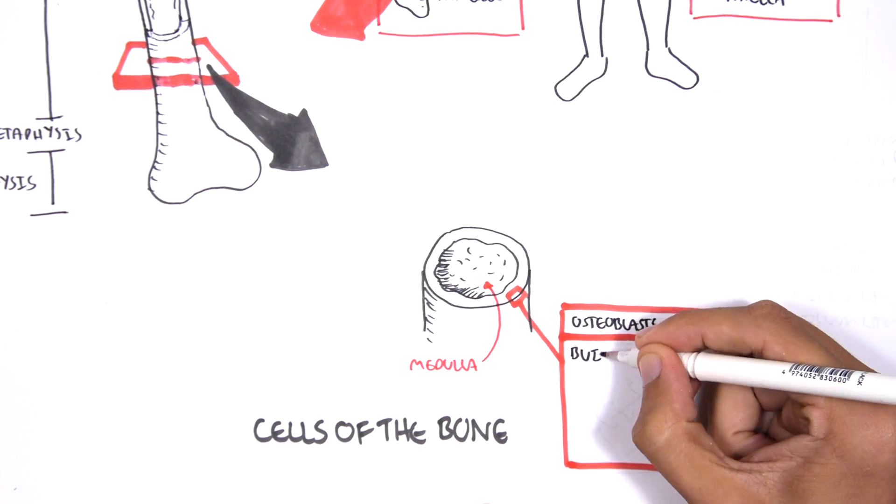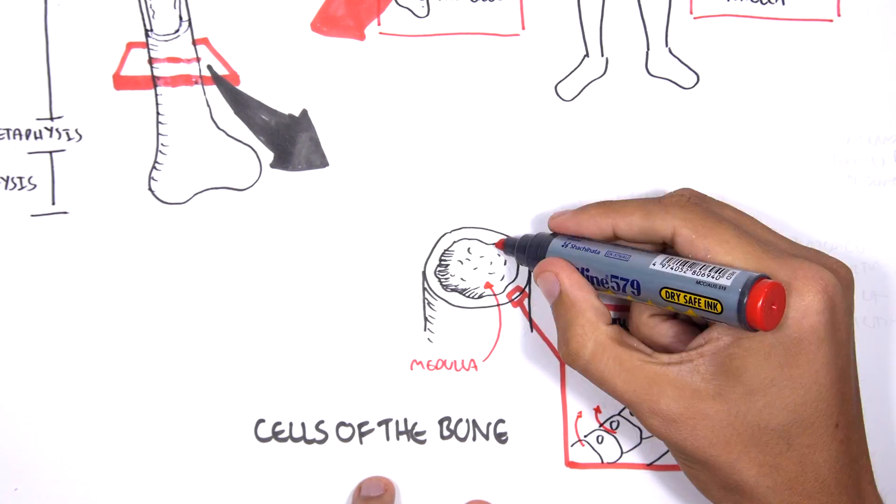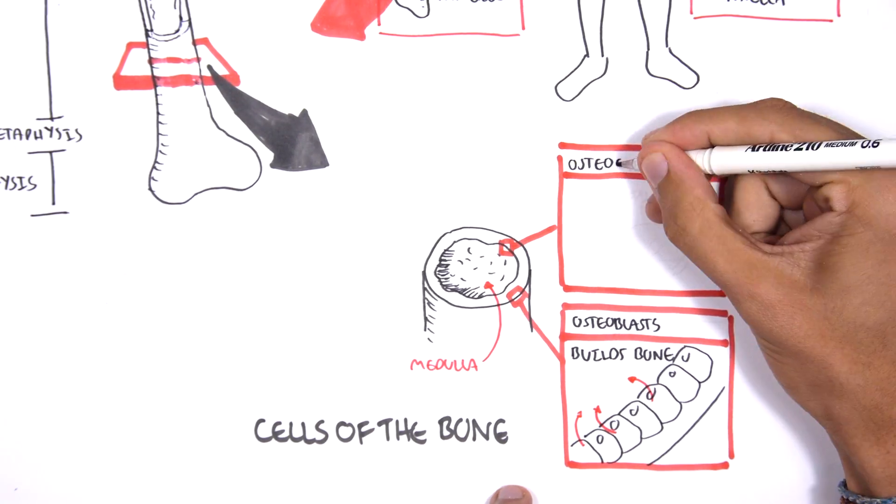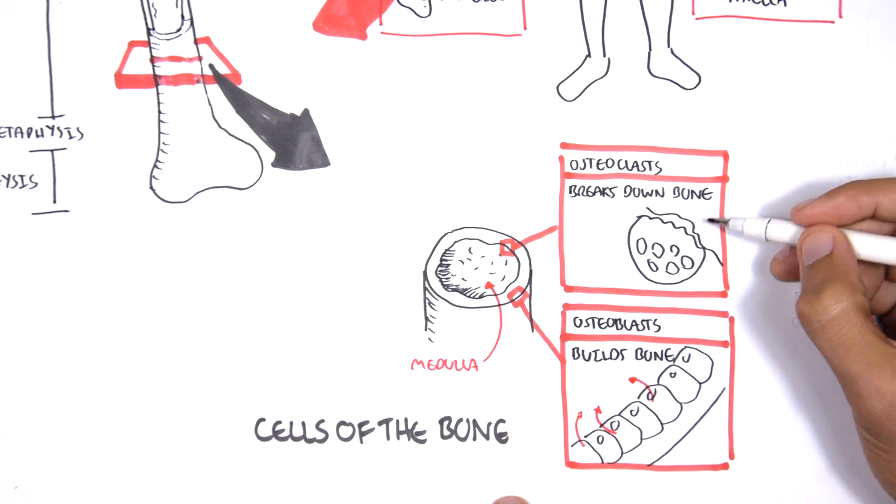Cells of the bone include osteoblasts, which are the cells responsible for building our bones. There are also osteoclasts, which are cells responsible for breaking down bone.